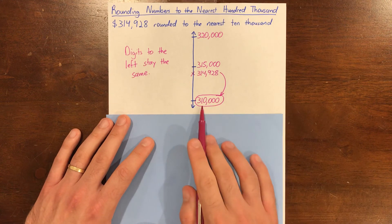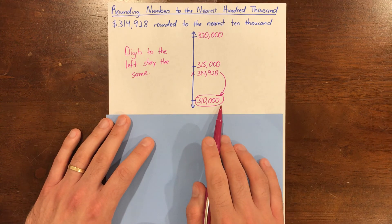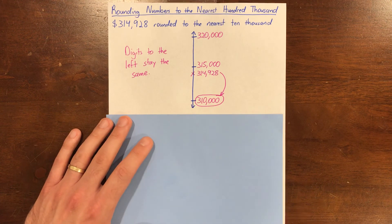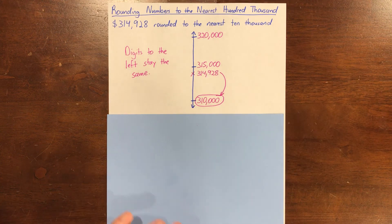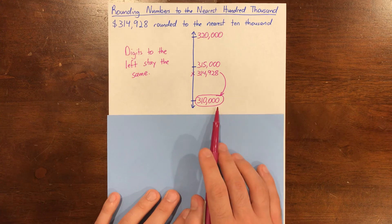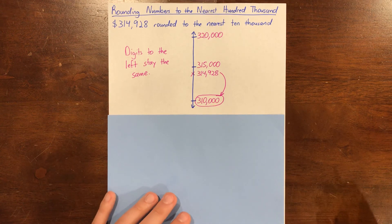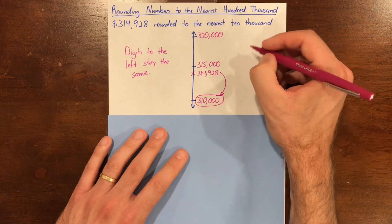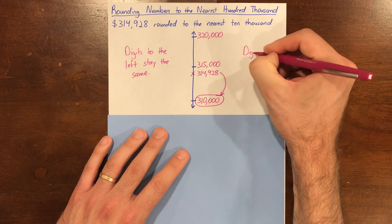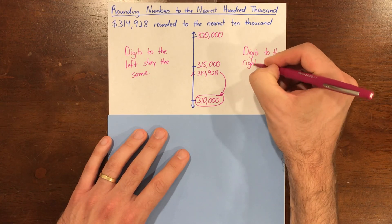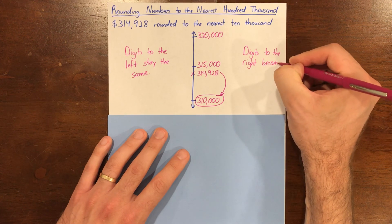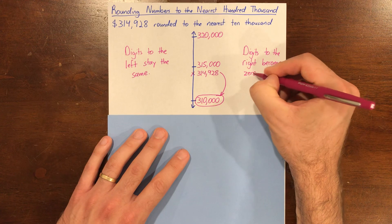What about the digits to the right of the place we're rounding to? What happens to them and why? Go ahead and say it out loud. The digits to the right of the rounded place become zeros because they are part of the rounded place value. I'm going to add a note: digits to the right become zeros.